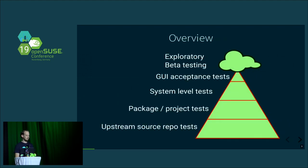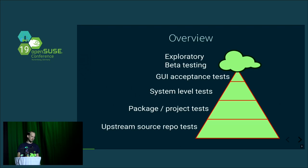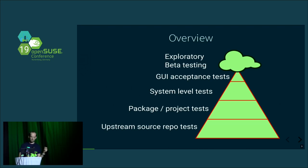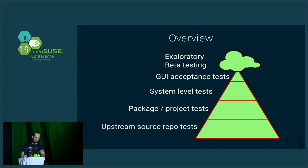I will use the illustration of the so-called test automation pyramid to guide through this. We will go from the bottom to the top. It starts with upstream source repo tests, where all the software we are talking about lives. Then we come to package and project tests for the tens of thousands of packages in the distributions, then system level tests, agreement acceptance tests, and at the top is the cloudy area of exploratory beta testing — something that by definition cannot run in automated tests.